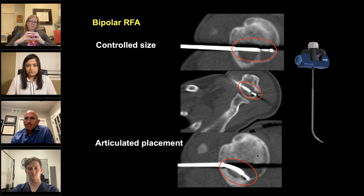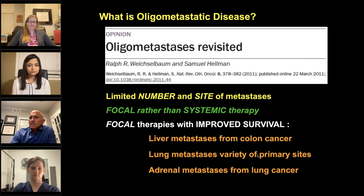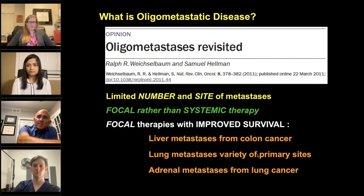Now let's talk about oligometastatic disease. We're very familiar with treatment of disease in the liver, lung, and adrenal glands because we know that if these sites are resected surgically, survival is improved. The question is whether it's effective to treat patients with disease elsewhere in the body. We're starting to learn that it's probably effective in terms of survival.